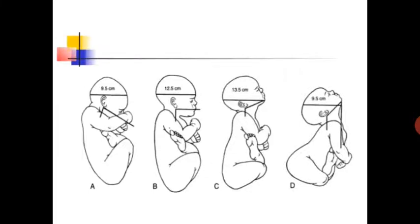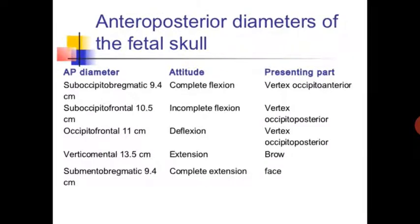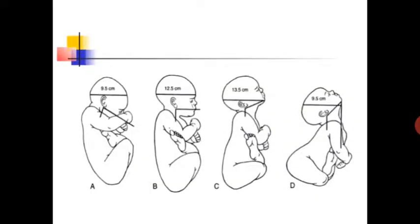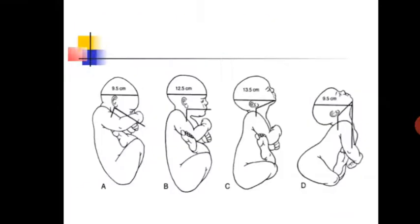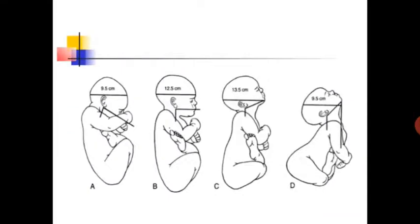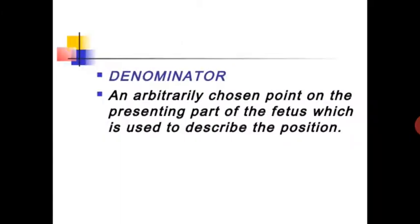To summarize the attitudes: A is completely flexion position, second is incomplete flexion position, third is extension position, and fourth is completely extension position — each corresponding to a different presenting diameter and presenting part.